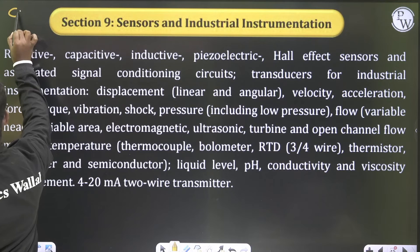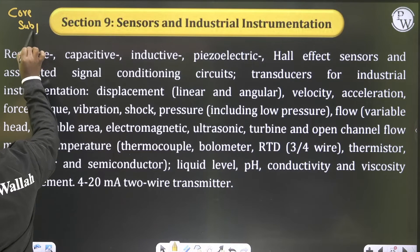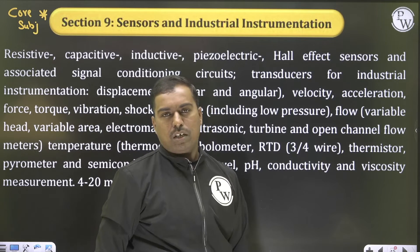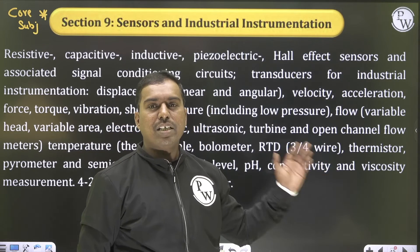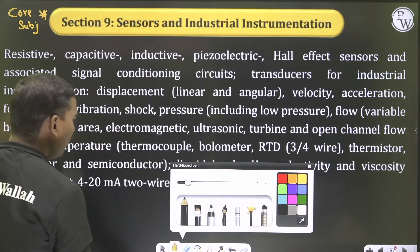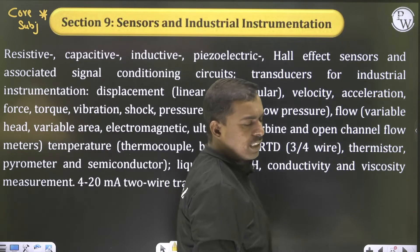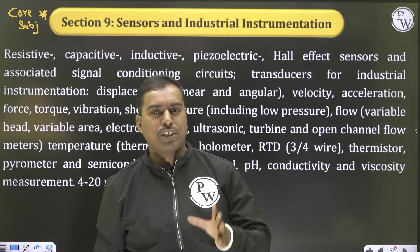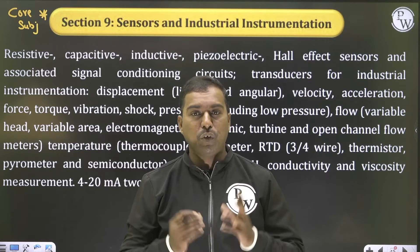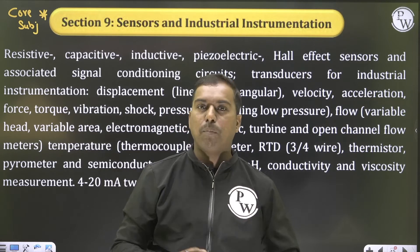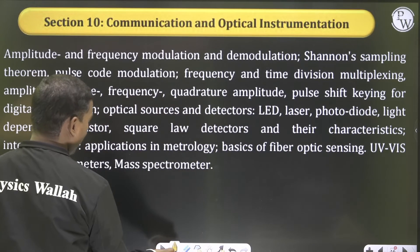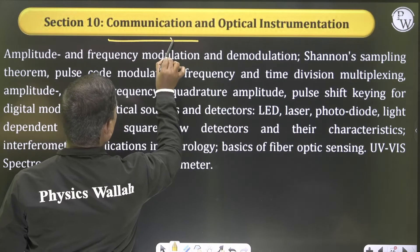The next subject is the core subject of instrumentation — sensors and industrial instrumentation. This is completely new for electrical and ECE students. Biomedical students have some awareness, but for electrical and ECE it is entirely new. This subject takes around 35 to 40 hours of preparation. Most questions are answerable if you know analog electronics, network theory, and op-amps.